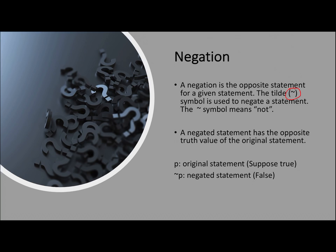Next we have negation. A negation is the opposite statement for a given statement. We use the symbol tilde — a squiggle — placed in front of the letter representing the statement we're negating. The negation symbol means 'not,' but it does not necessarily mean simply adding the word 'not.' A negated statement has the opposite truth value of the original: if the original is true, the negation is false, and vice versa.